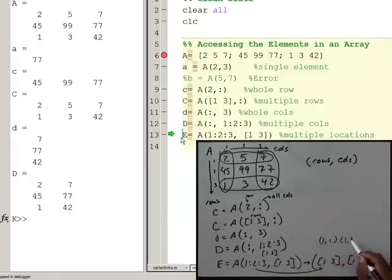1, comma, 3, those are my row 1, columns 1 and 3, and then row 3, columns 1 and 3.